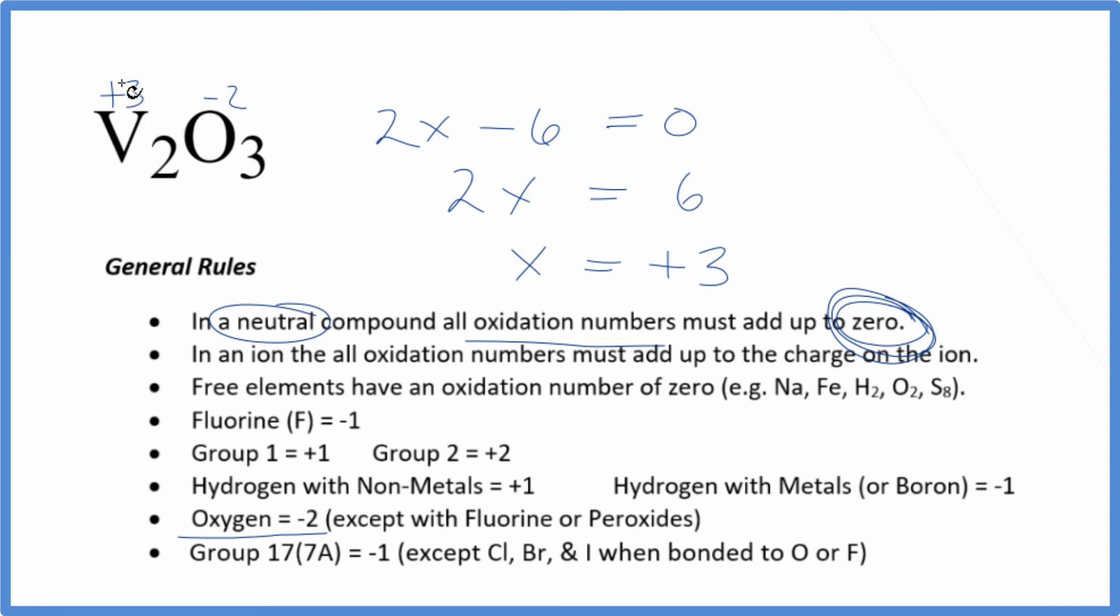Each vanadium atom is going to have an oxidation number of plus three in the V2O3 compound. This is Dr. B and thanks for watching.